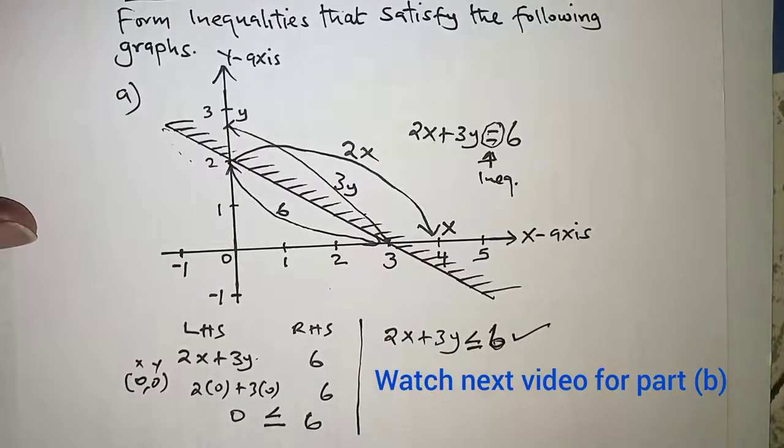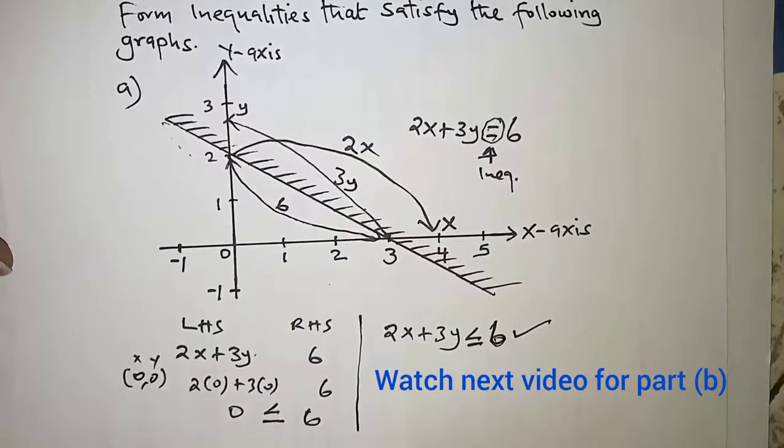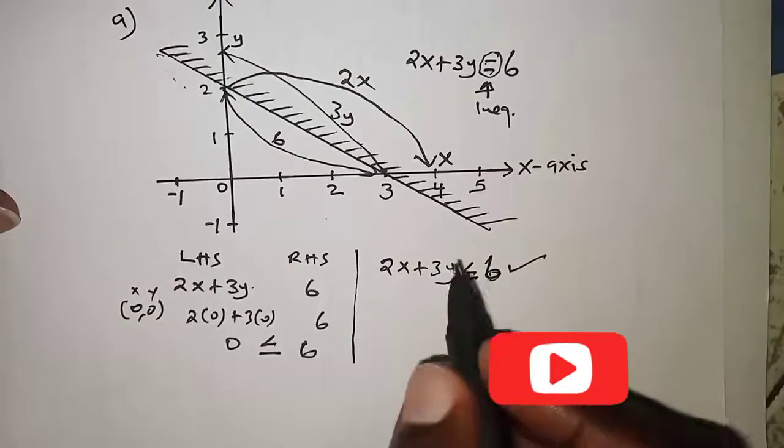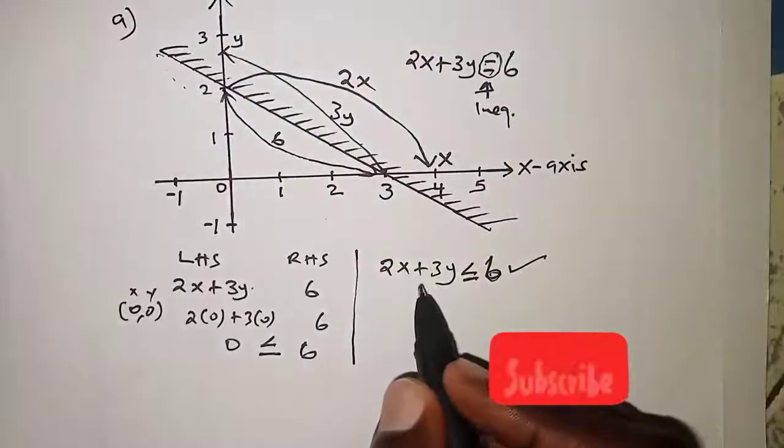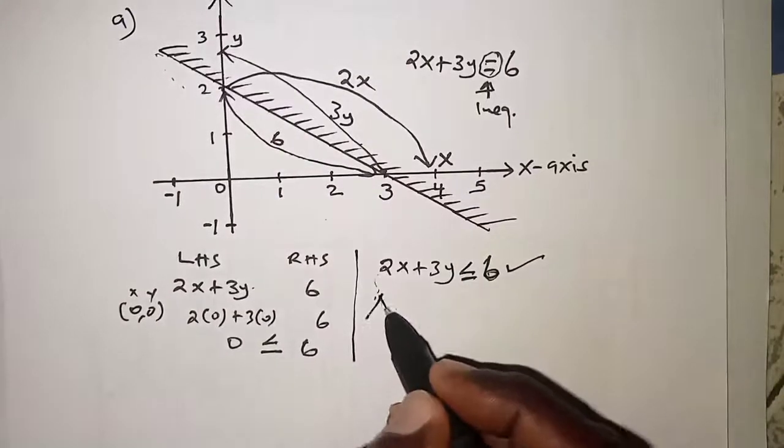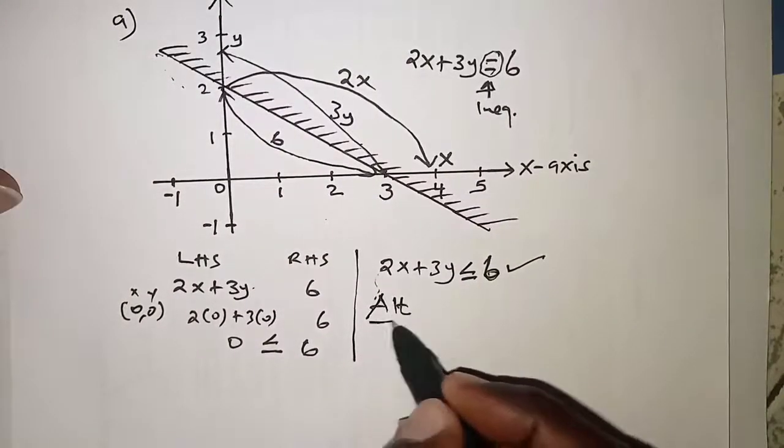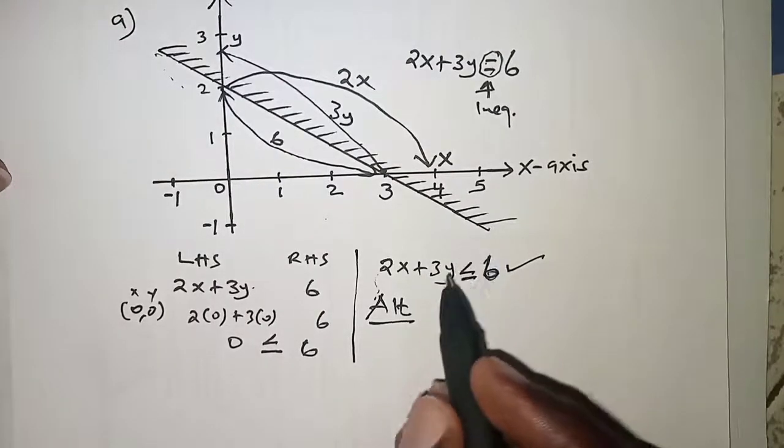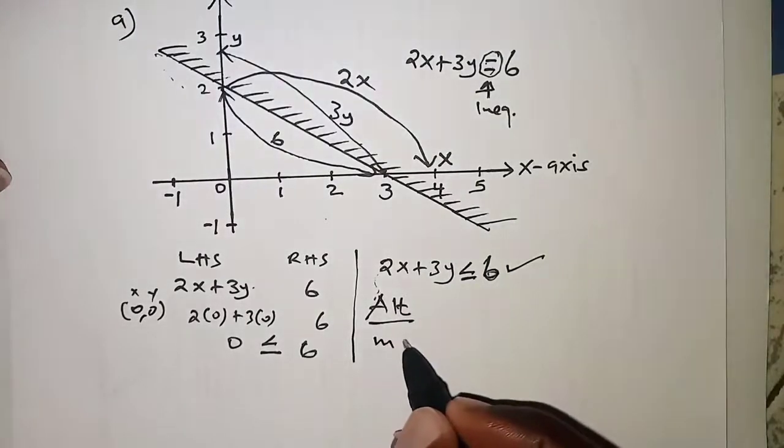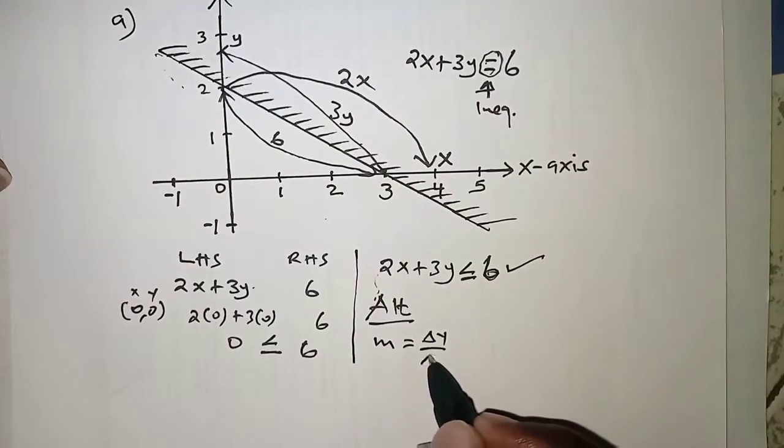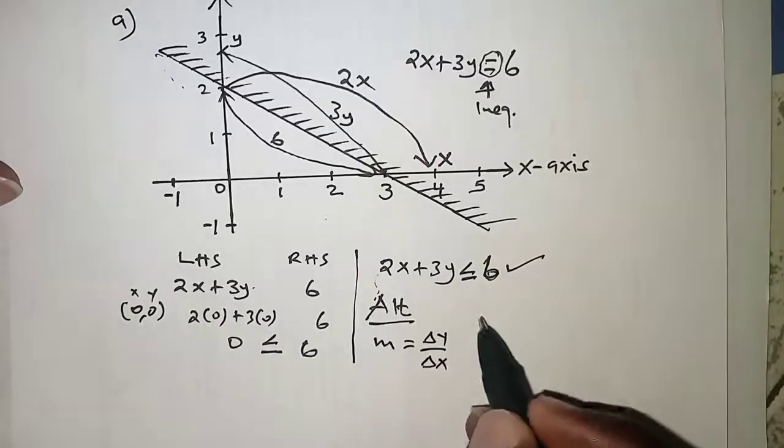So alternatively, we will have to determine the gradient of the line. The gradient is usually given by change in y all over change in x. First of all, we have two points on the line.